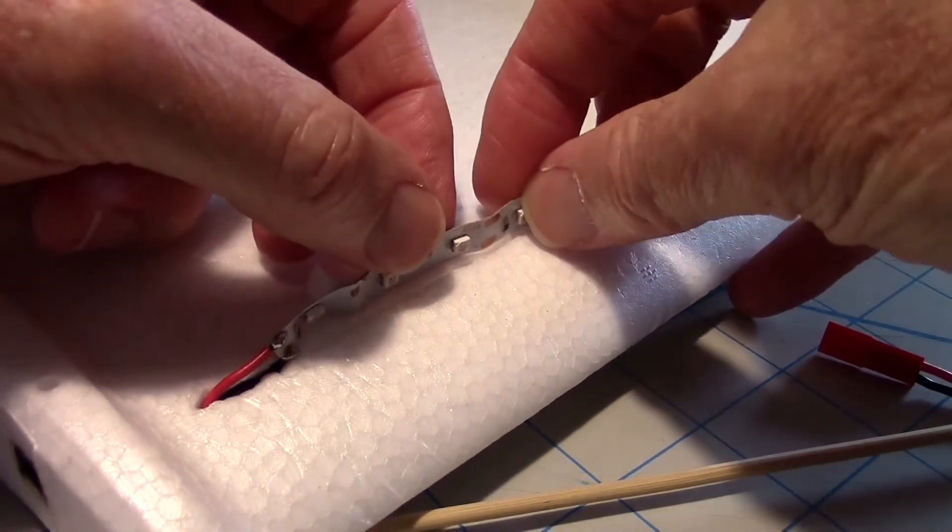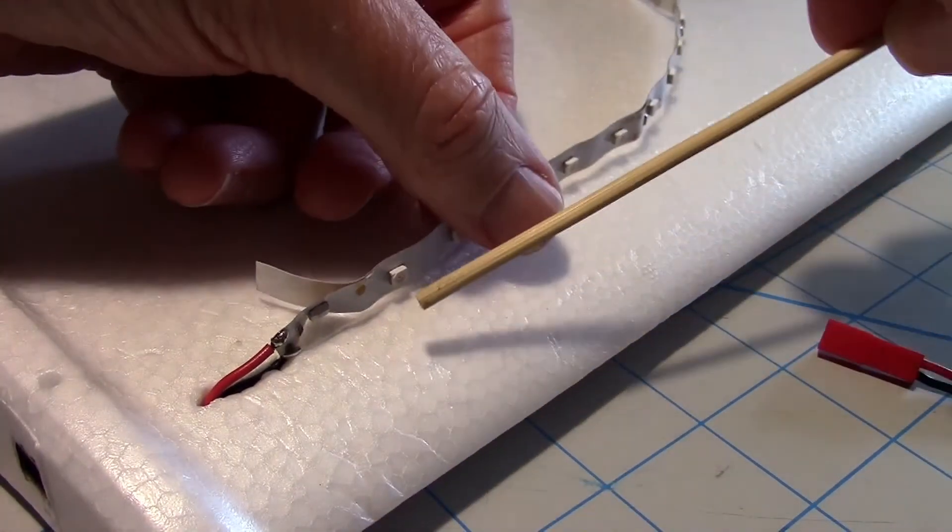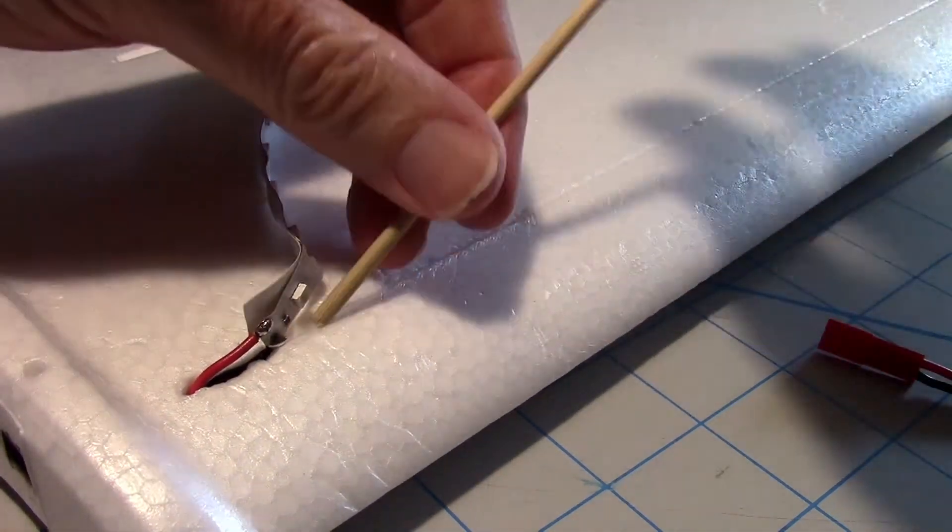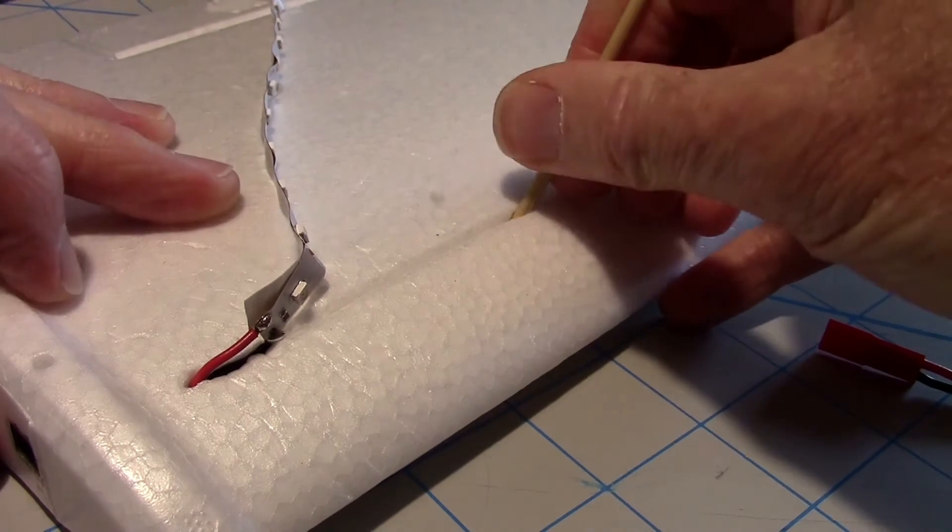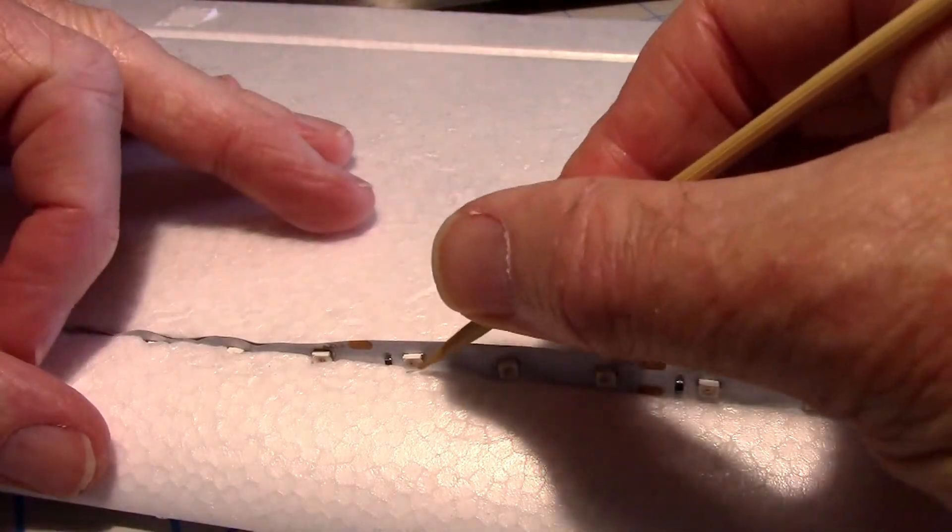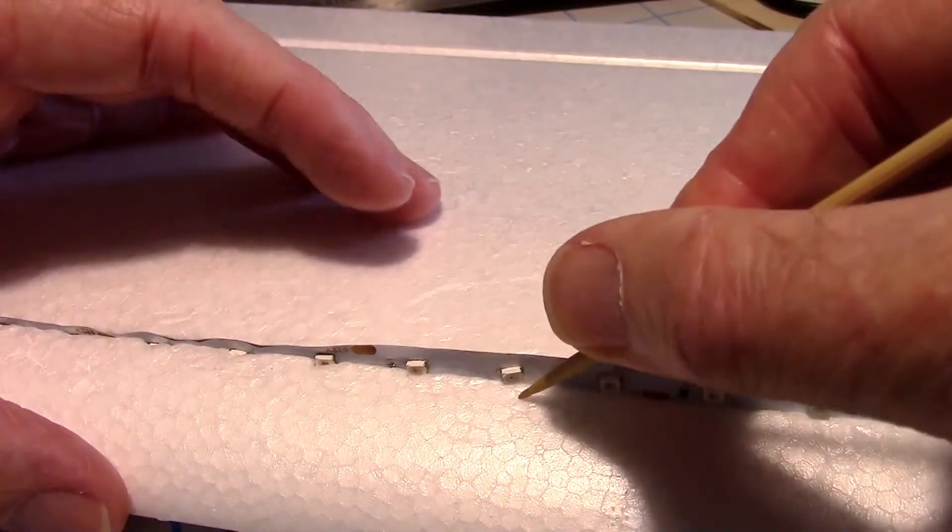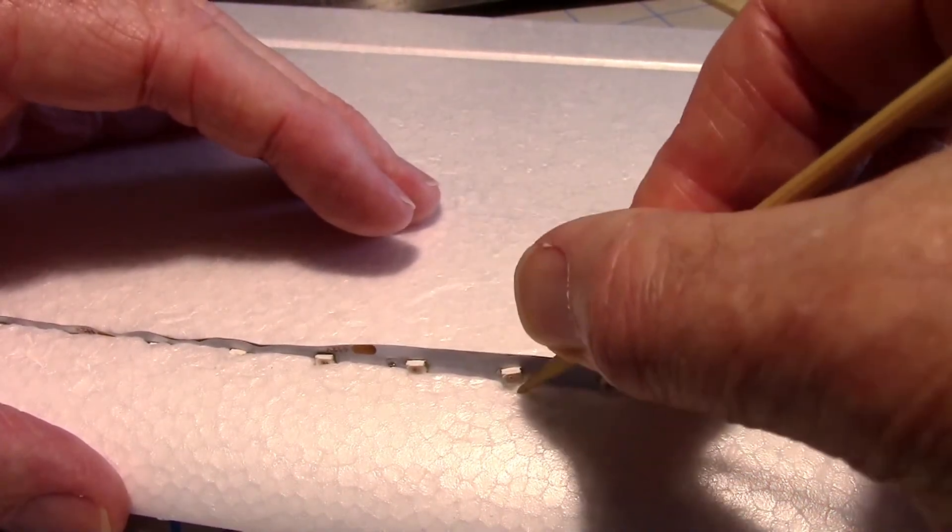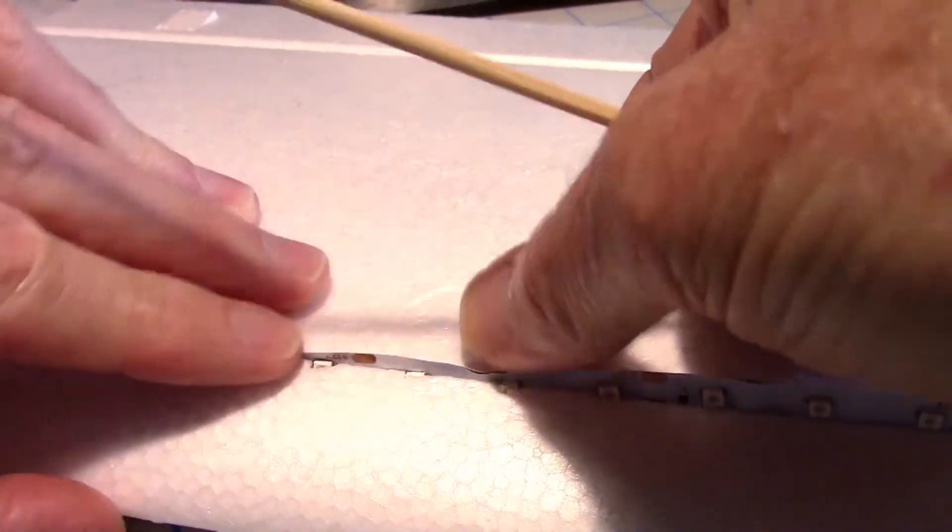These LEDs protrude out a little bit so they won't go down into the slot easily. I think I'm going to have to widen the slot with a barbecue skewer. I found I need to give the LEDs a little help going into the slot by using a barbecue skewer to wallow a little opening around them and then push them down in there.